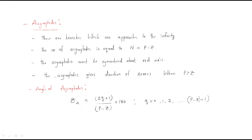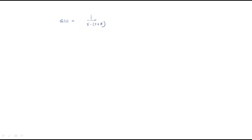Hello everyone. In this section we will discuss the extension part of root locus. One important part of root locus is asymptotes. What are asymptotes? Here we have an example open loop transfer function: G(s) = 1 / [s(s+5)].